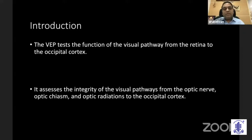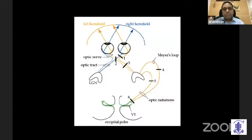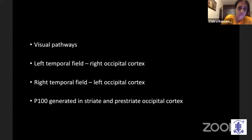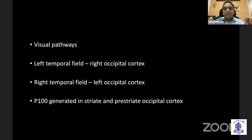VEPs assess the integrity of the visual pathway from the optic tract all the way up through the optic radiation to the occipital cortex. The temporal hemifield is represented by the contralateral cortex in the occipital lobe — the left hemifield in the right occipital cortex. The macula is represented by the occipital pole, so in occipital polar lesions like tumors, we will not get macular sparing. The P100 is the most important component of visual evoked potentials, generated in the occipital cortex.